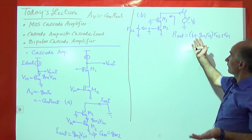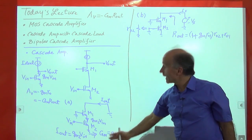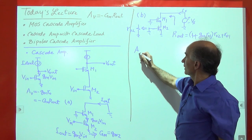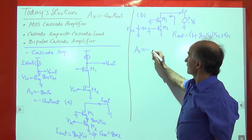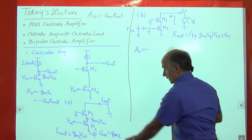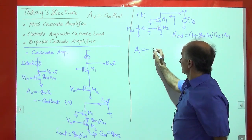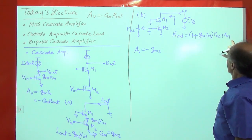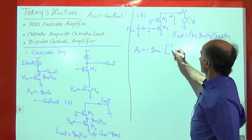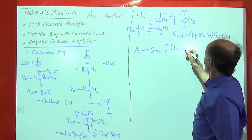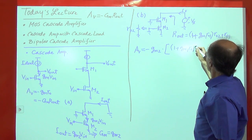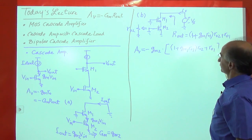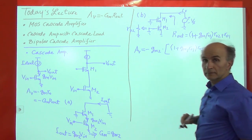We now have both GM and R_out, so the voltage gain of this cascode stage with an ideal current source is minus GM2 times (1 + GM1·RO1)·RO2 + RO1.